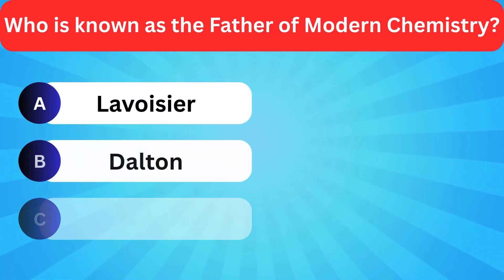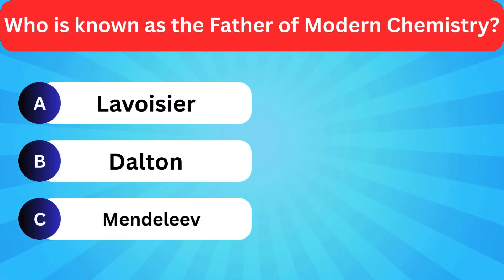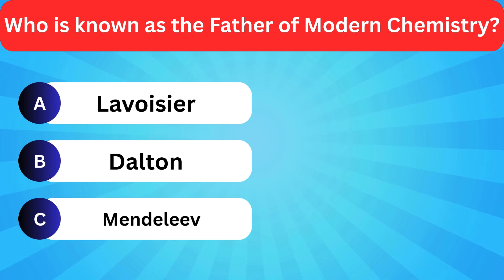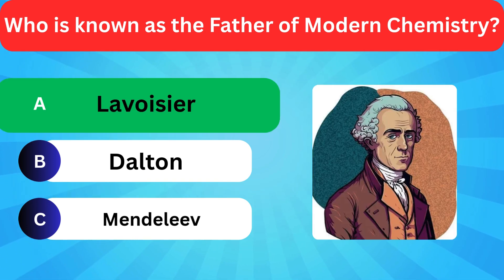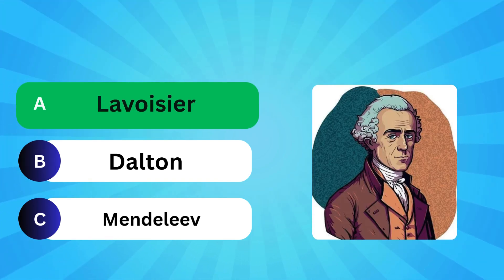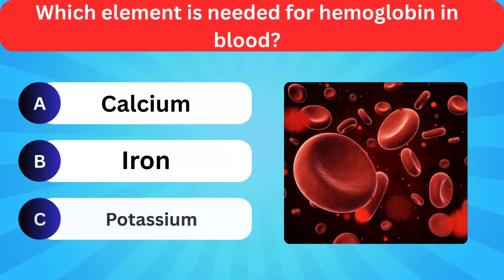Who is known as the father of modern chemistry? Options: Lavoisier, Dalton, Mendeleev. Correct answer is Lavoisier.